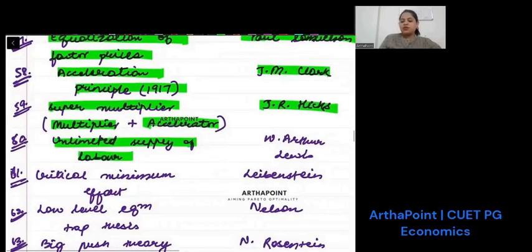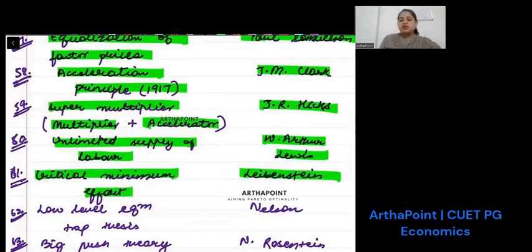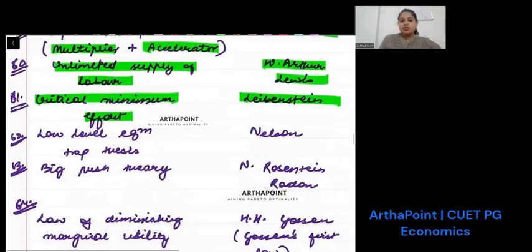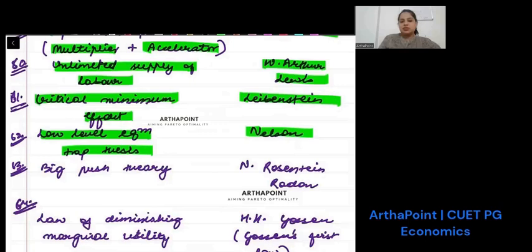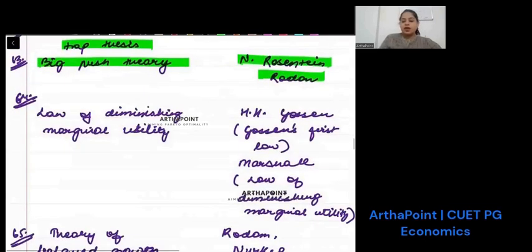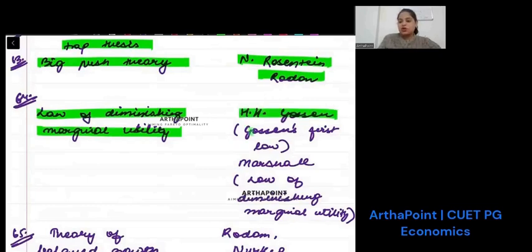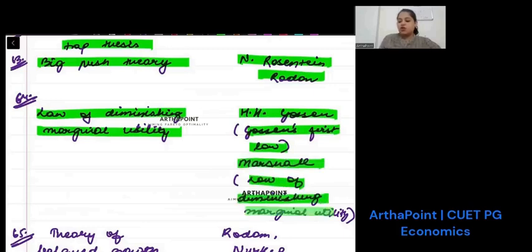Unlimited supply of labor was given by Arthur Lewis. Critical minimum effort was given by Leibenstein. Low level equilibrium trap thesis was given by Nelson. Big push theory was given by Rosenstein-Rodan. Law of diminishing marginal utility was given by first Gossen—it's called Gossen's first law—and then Marshall, which named it as law of diminishing marginal utility.